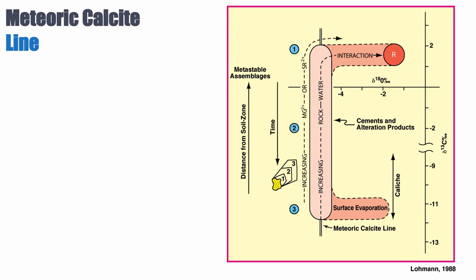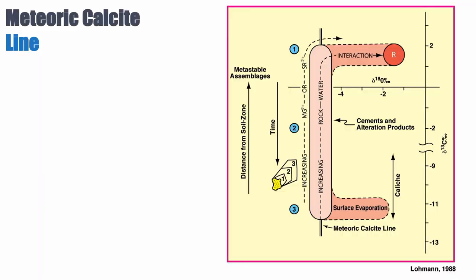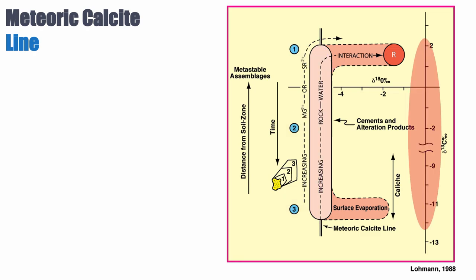We can consider three cements: cement number one is very close to the host rock, cement number two is a bit further away, and cement number three is the furthest away — the last phase to precipitate. In a meteoric system, oxygen is dominated by the oxygen composition of the water, so the delta O18 of the cement will represent the delta O18 of the meteoric fluid. This is why many cements have the same oxygen isotope composition — cement one, two, and three all share the same delta O18. However, the delta C13 changes.